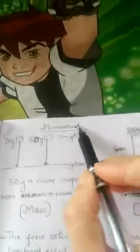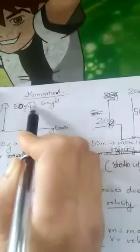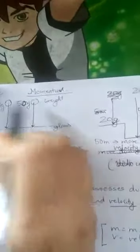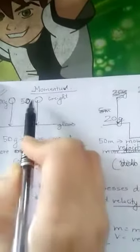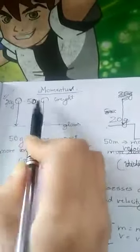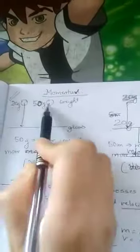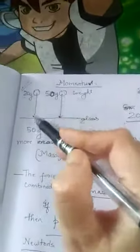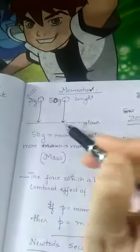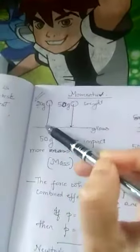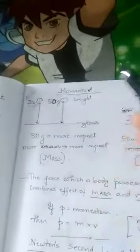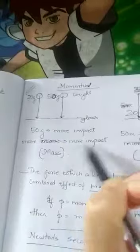Now we will be doing about momentum. If there are two objects here, one is of weight 20 gram, another is of weight 50 gram. There is a plain glass surface below, and we allow these two objects to fall on the glass. We will find that the impact of the 20 gram is lesser, but the impact of the 50 gram will be more, because the more the mass, the more the impact.